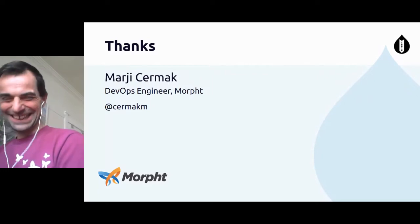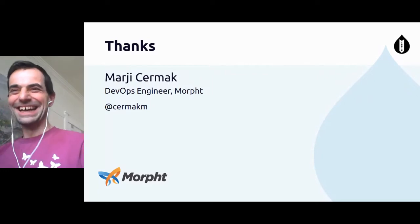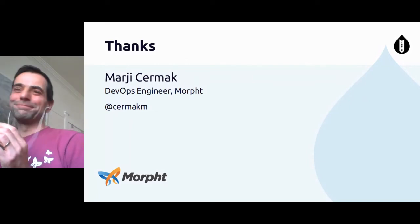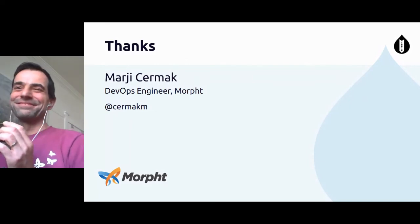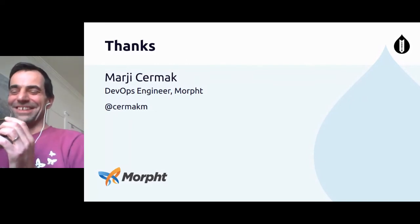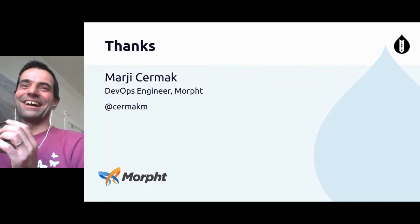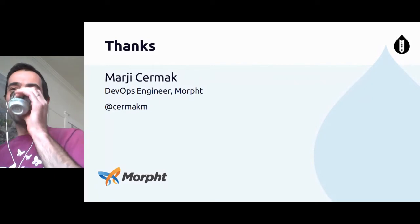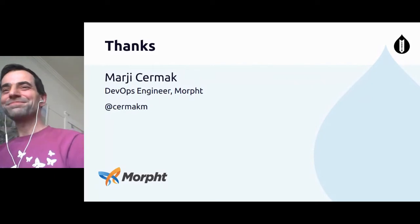I've got 590 Docker images and I ran system prune about a week ago. So maybe they are idling, running close to the limit. Okay. So thank you very much, Margie, for the talk.